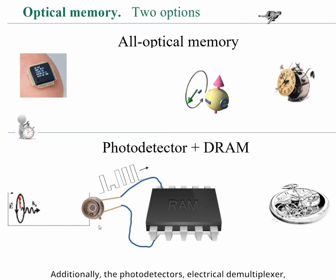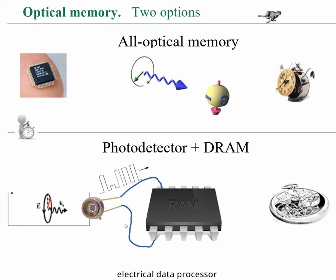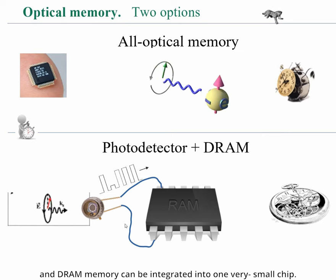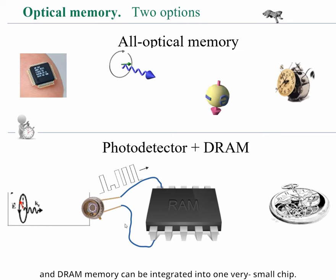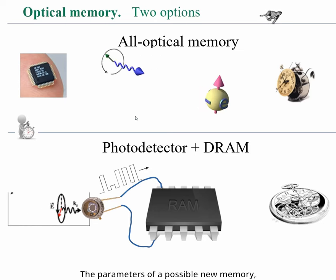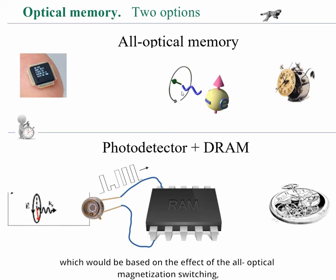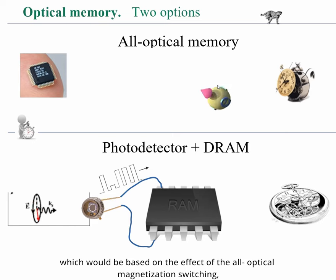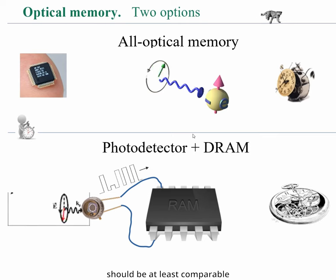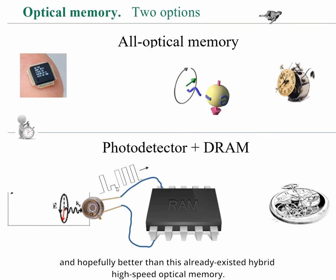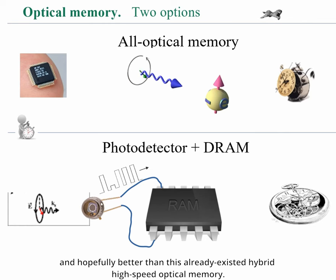Additionally, the photodetector, electrical demultiplexer, electrical data processor, and DRAM memory can be integrated into one very small chip. The parameters of possible new memory based on the effect of all-optical magnetization switching should be at least comparable and hopefully better than this already existing hybrid high-speed optical memory.